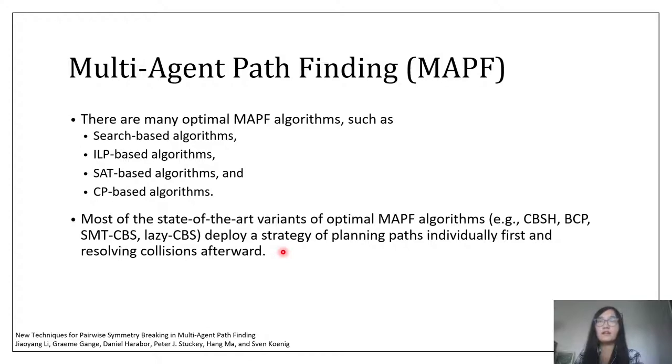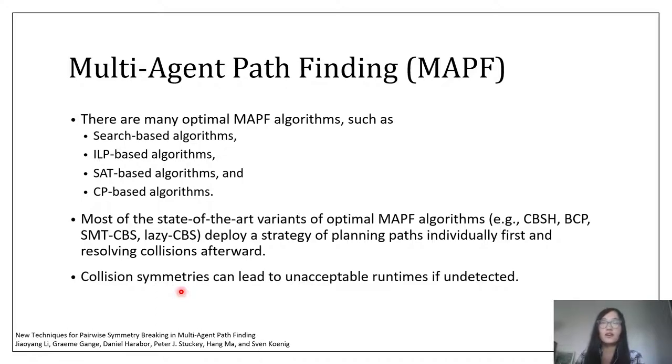Therefore, recently, people have invented many new algorithms that deploy a strategy of planning paths individually first and resolving collisions afterward. These methods are shown to be much faster than the previous methods. However, these methods suffer from collision symmetries, and if these symmetries are undetected, they could lead to unacceptable runtimes. Therefore, in this work, we study two new classes of collision symmetries and propose symmetry-breaking constraints to resolve these symmetries in a single branching step.